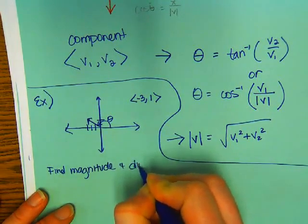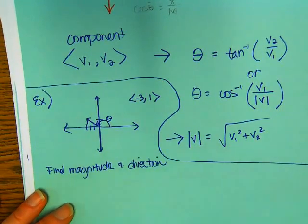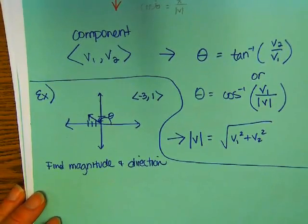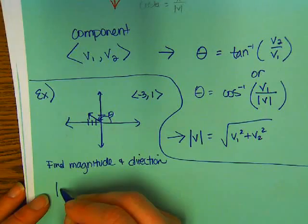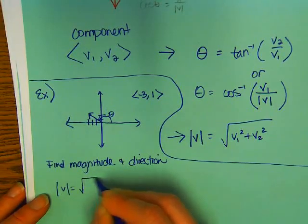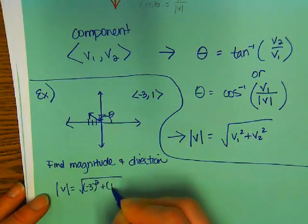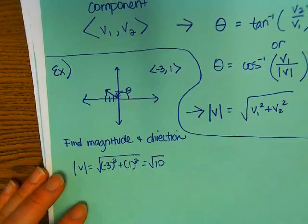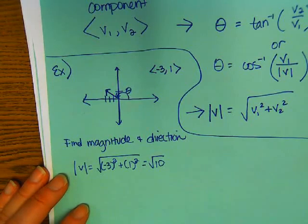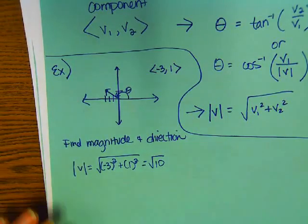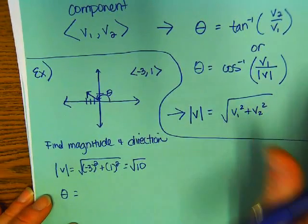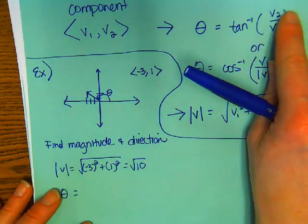Okay. Let's find the magnitude and direction. So, let's do magnitude first. We're just going to do negative 3 squared plus 1 squared. The magnitude is root 10.